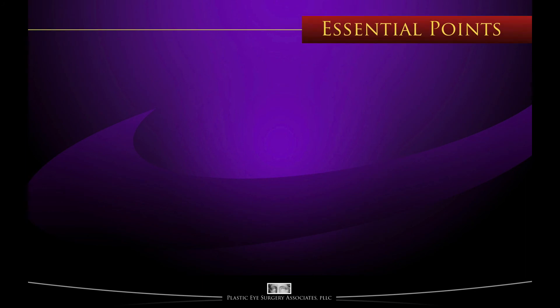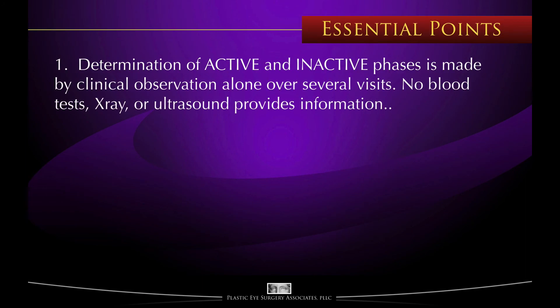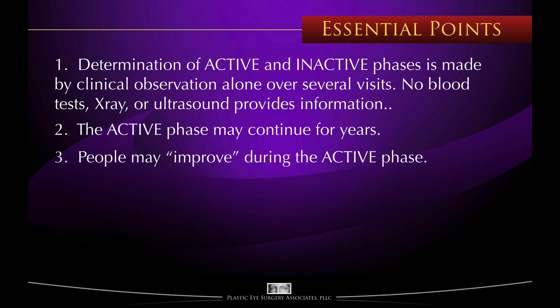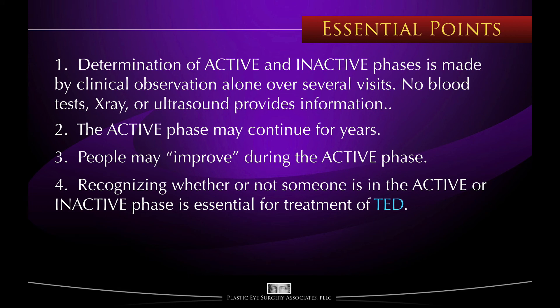Here are the essential points of this video section. Determination of active and inactive phases is made by clinical observation alone over several visits — no blood test, x-ray, or ultrasound provides this information. The active phase may continue for years, but on average lasts about 18 months. People may improve during the active phase; active phase means change, not necessarily worsening. Recognizing whether or not someone is in the active or inactive phase is essential for the treatment of thyroid eye disease, which we will now discuss in the next section of this video series.